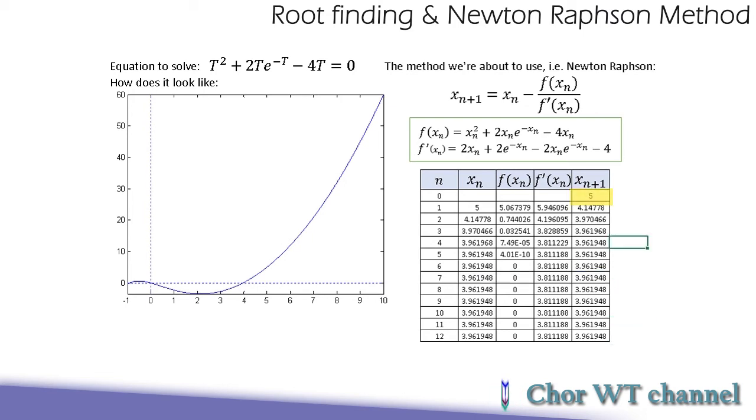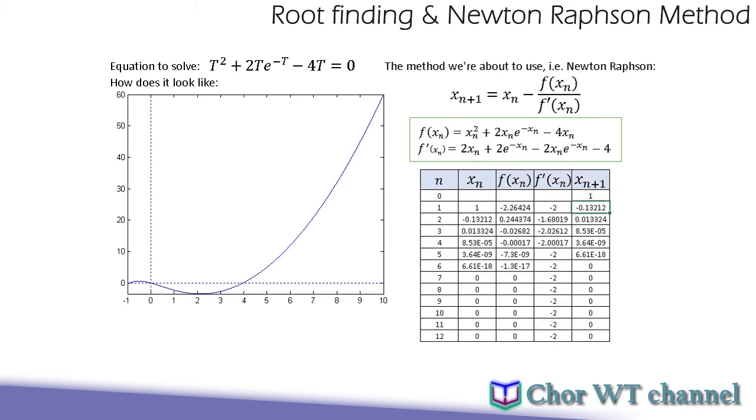So now let's say we change the initial starting method and see what happens. Now we change it to 1. And you can see that now the solution will converge to 0, which is another solution right here.